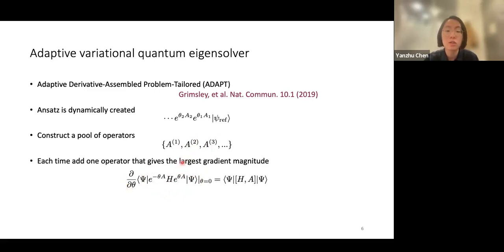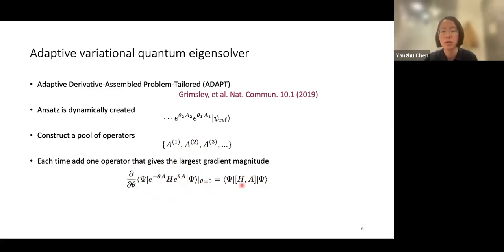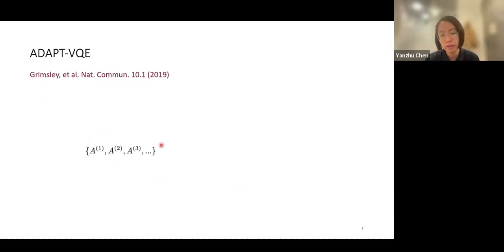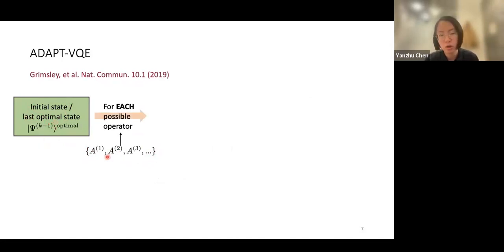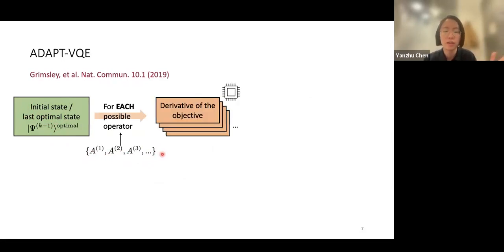We take the derivative of the energy expectation value with respect to the newly added variational parameter. Evaluated at zero, this amounts to measuring the expectation value of the commutator between the target Hamiltonian and the added candidate operator. We start from some initial state, then for each candidate operator in our pool we measure this gradient on the quantum processor.